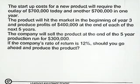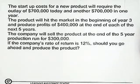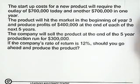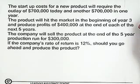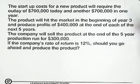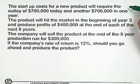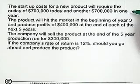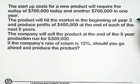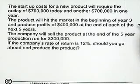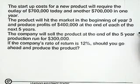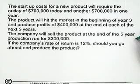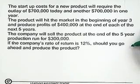When you have a cash flow question, the important thing to do is set up your timeline. We need to read through the question and set up our timeline based on the information given. The startup costs for a new product will require the outlay of $700,000 today and another $700,000 in one year. The product will hit the market at the beginning of year three and produce profits of $400,000 at the end of each of the next five years. The company will sell the product at the end of the five-year production run for $300,000. If the company's rate of return is 12%, should you go ahead and produce the product?